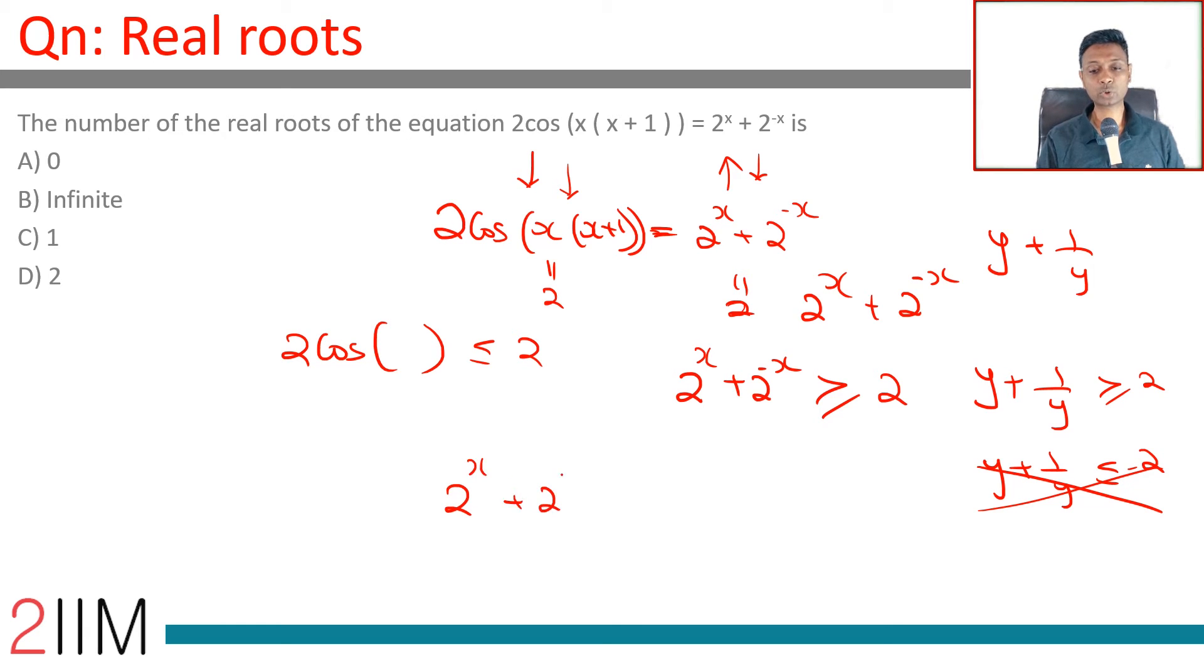So, 2 power x plus 2 power minus x. When will it be equal to 2? When x is 1 or minus 1. When x is 1, it will be 2. Sorry. When 2 power x is 1, not x is 1. When 2 power x is 1 or when x is 0. 1 plus 1 is 2, not x is 1. When x is 1, it becomes 2 plus 1 by 2. When x is minus 1, it becomes 1 by 2 plus 2.